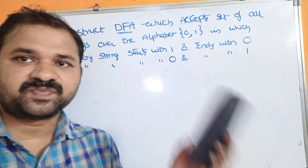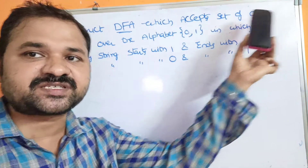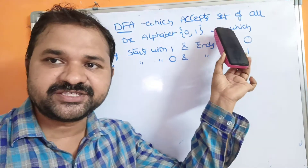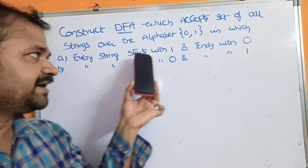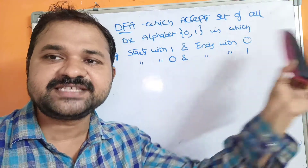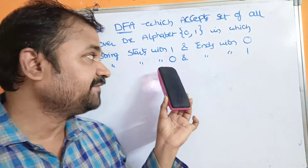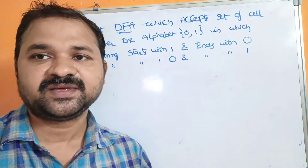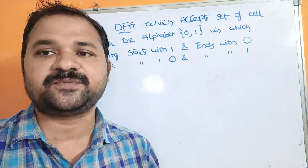Now let's see this example. Construct a DFA which accepts the set of all strings over the alphabet {0,1} in which every string starts with 1 and ends with 0. This is our first example. The second example is: every string starts with 0 and ends with 1. We have to construct DFA for these two examples.